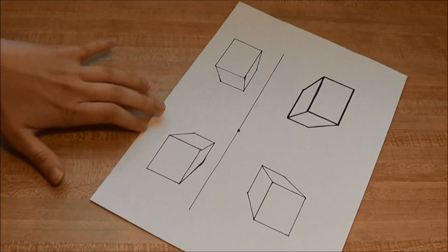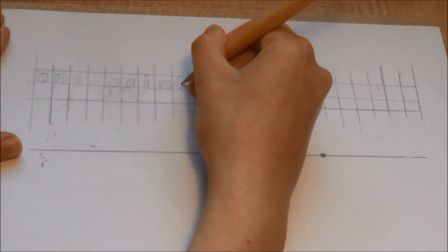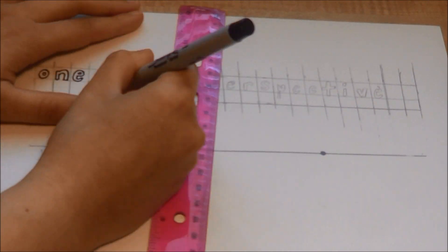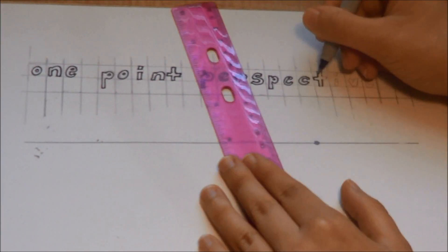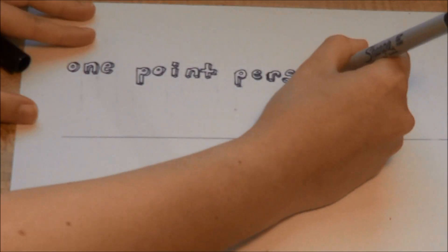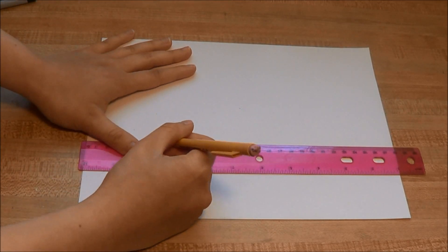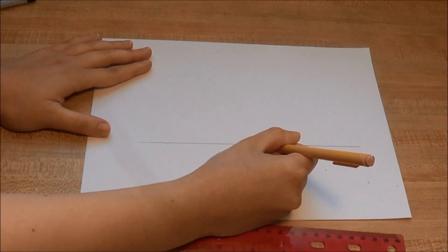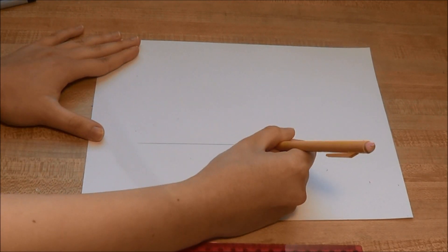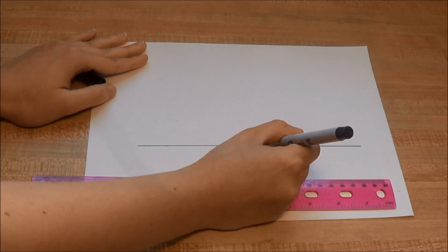Hi everyone! Today I'm going to show you how to draw a rectangular prism using one point perspective. Start by drawing a horizontal line and draw a dot on this line. The dot is called the vanishing point.